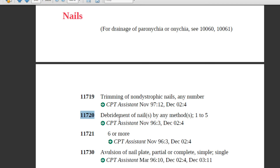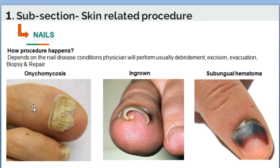We have another code related to debridement of nails: 11720 — debridement by any method, 1 to 5 nails. If the physician documents six or more nails debrided in the patient's report, then assign 11721. This procedure is performed for onychomycosis disease conditions.